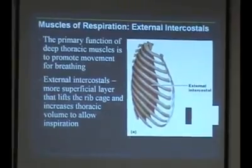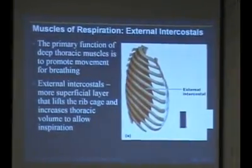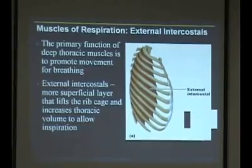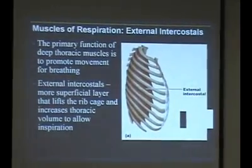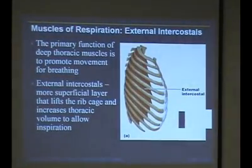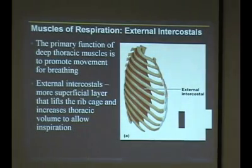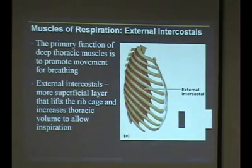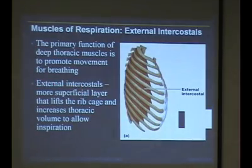That covers all the muscles related to the erector spinae and other back muscles, from the iliac crest and sacrum all the way up to the occiput. Now we'll talk about muscles of respiration. You have intercostal muscles — external intercostals and internal intercostals.